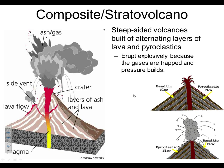We talked about an introduction to volcanoes in the last lesson. Now we're going to get into our violent volcano types. We're going to start with stratovolcanoes, also called composite volcanoes. Composite or stratovolcanoes are steep-sided volcanoes built of alternating layers of lava and pyroclastics. They erupt explosively because the gases are trapped and the pressure builds.